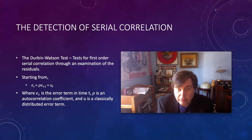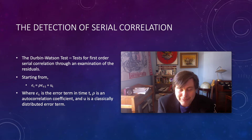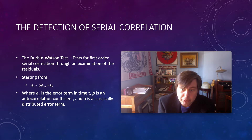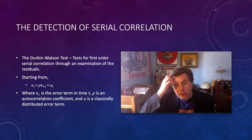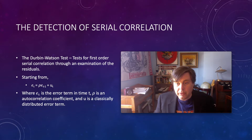So how do we detect serial correlation? I'm going to go through the bread-and-butter methods. The first and classic one is the Durbin-Watson test — a test for first-order serial correlation through an examination of the residuals. Before going further, one of the first things you should do in time series analysis to detect problems is to start by plotting the residuals.